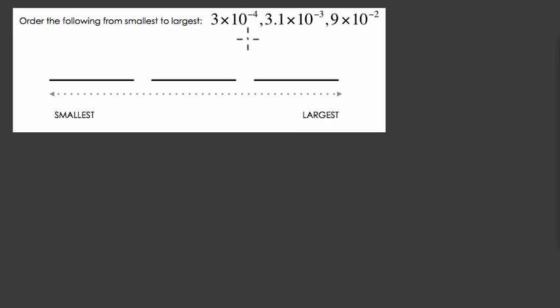Well, these numbers are actually positive numbers. This means 3 times 1 over 10 to the 4th, and 3.1 times 1 over 10 to the 3rd, and 9 times 1 over 10 squared. In other words, these negative exponents just refer to division. So we've got these positive numbers, and we're just dividing them over and over again, which means we really have positive numbers.